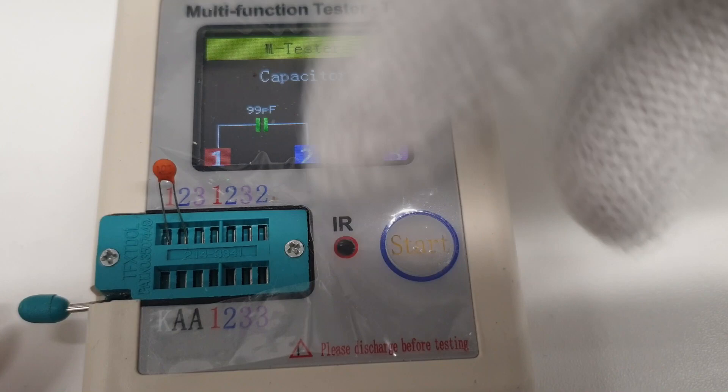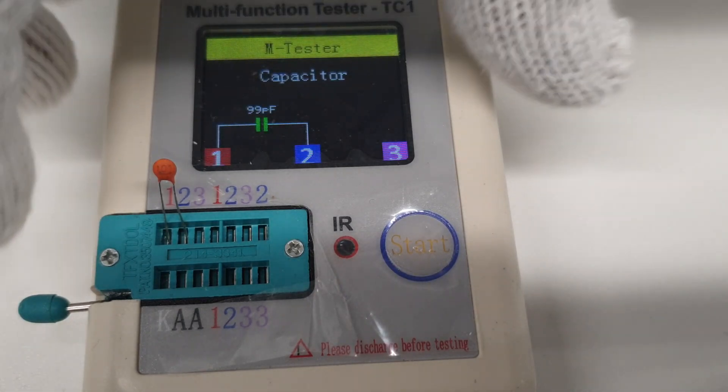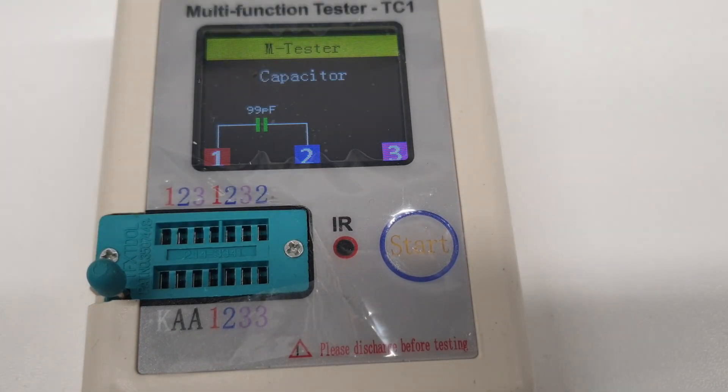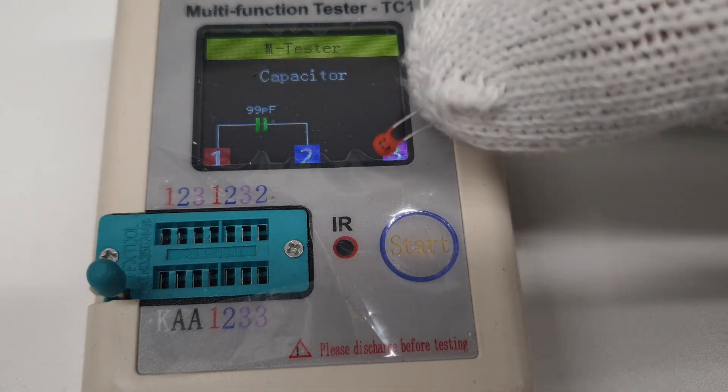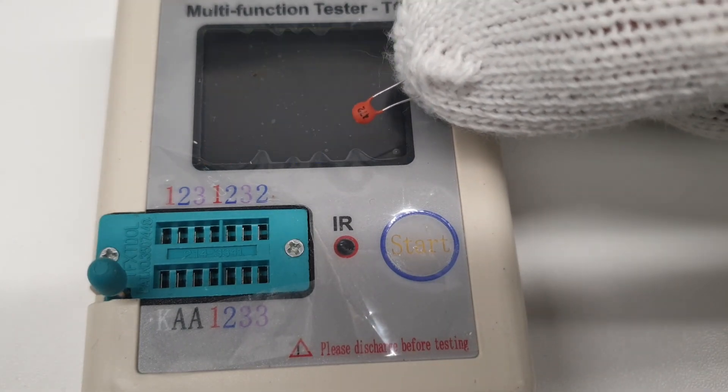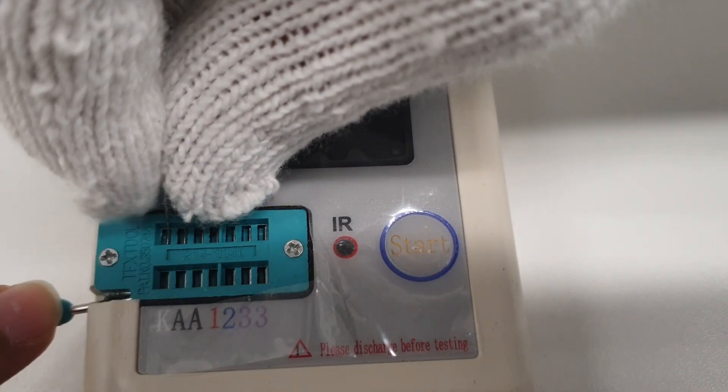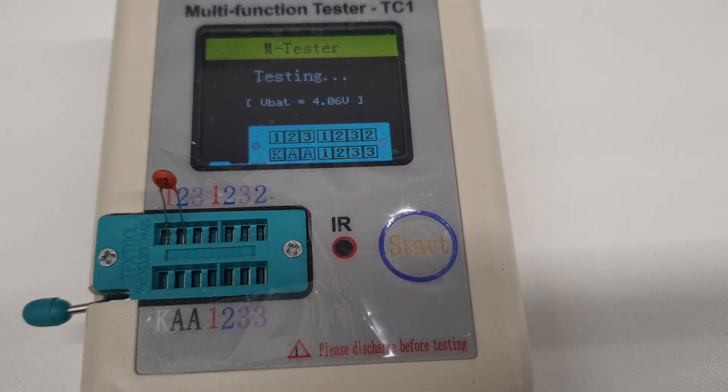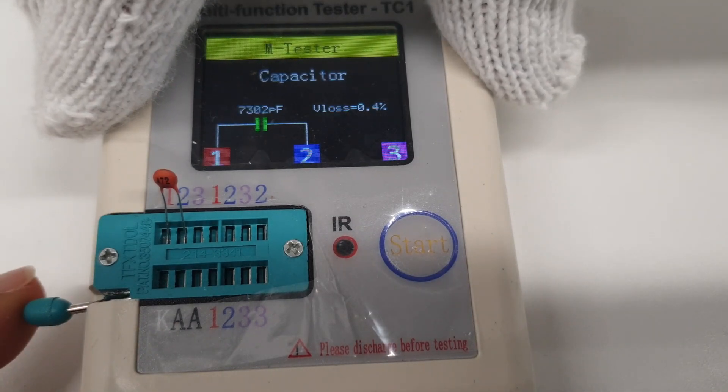99 picofarads. I don't know why it took so long, but it's pretty much close - it's a 100pF capacitor and it's reading it as 99. That's good. Let's try this one. This says 472, which should be 4.7 nanofarads. Lock it and do it. It says 7302 picofarads, which is like 7.3 nanofarads, pretty much accurate. That's good.